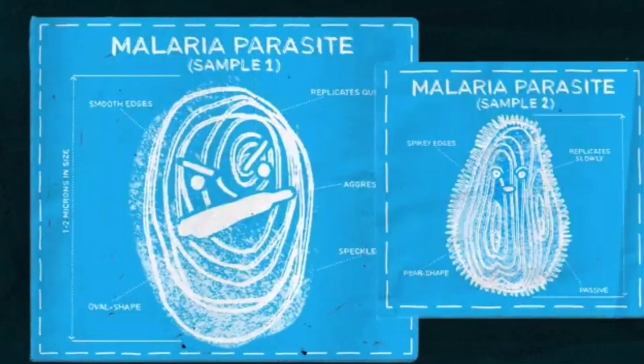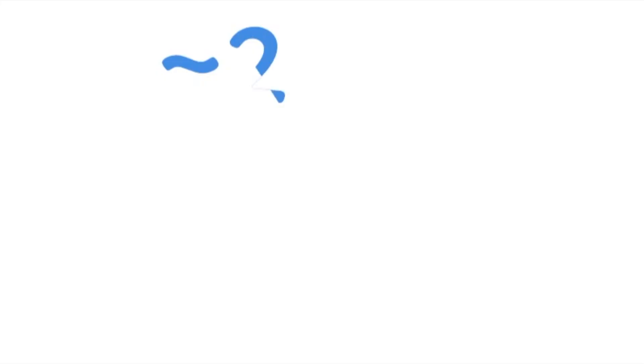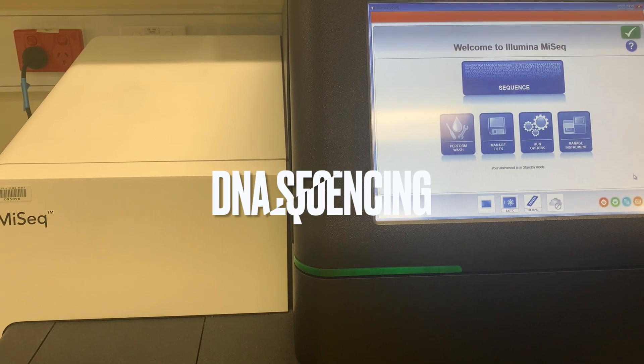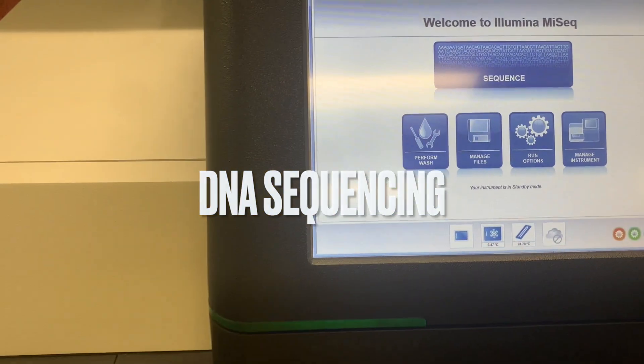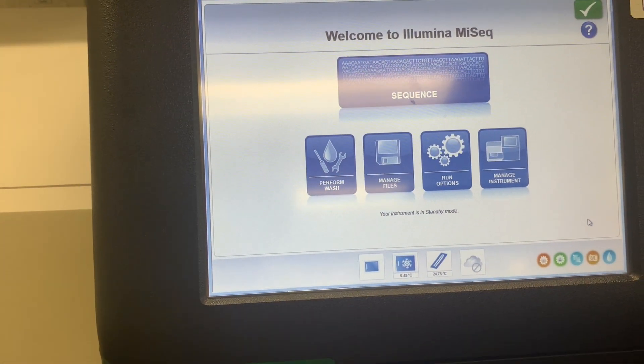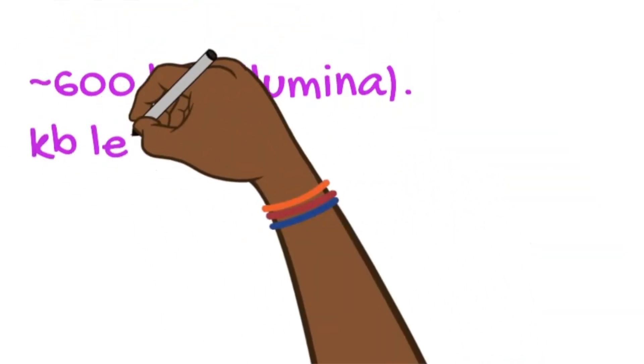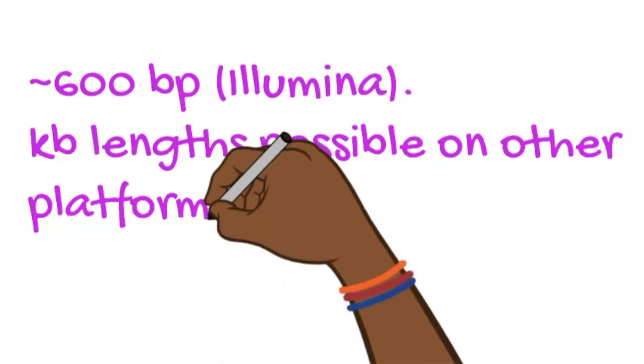The genome size of the parasite is 23 megabases. Currently, the machines for sequencing DNA cannot sequence that long length of DNA in one hit. They typically can handle up to 600 base pairs.